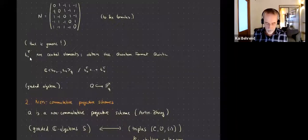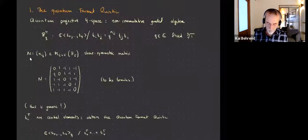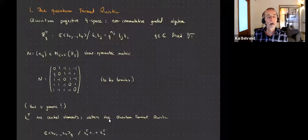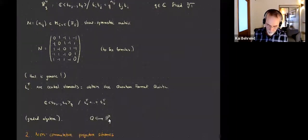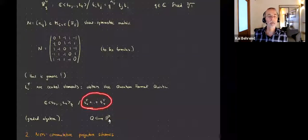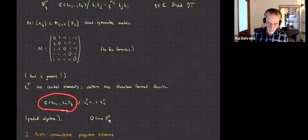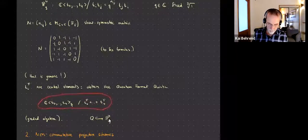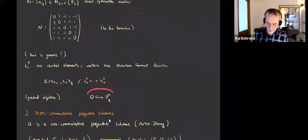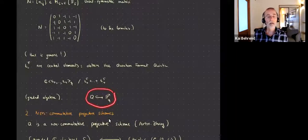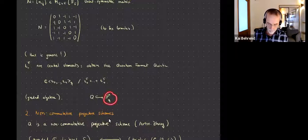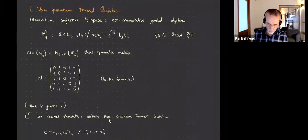Note that the t_i to the fifth are central elements — they commute with everything because of these being fifth roots of unity. So if I look at the Fermat quintic equation t_0^5 + ... + t_4^5, that's a central element in this quantum polynomial ring, and so it makes sense to divide by it. I get a graded ring, a graded C-algebra — a hypersurface in this quantum P^4. That's the quantum Fermat quintic.